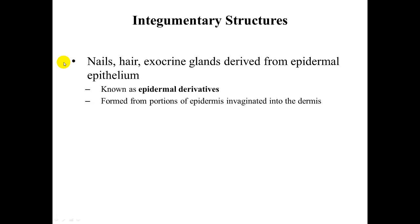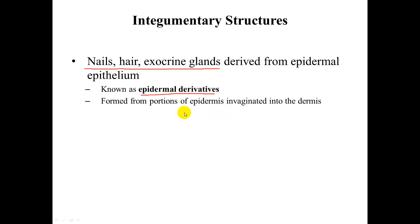Welcome to this lecture on integumentary structures, or accessory organs of the skin. The first thing to keep in mind is that each of these accessory organs — the nails, hair, and exocrine glands — are derived from epidermal epithelium. These are known as epidermal derivatives, and they are formed from portions of the epidermis that are invaginated into the dermis.